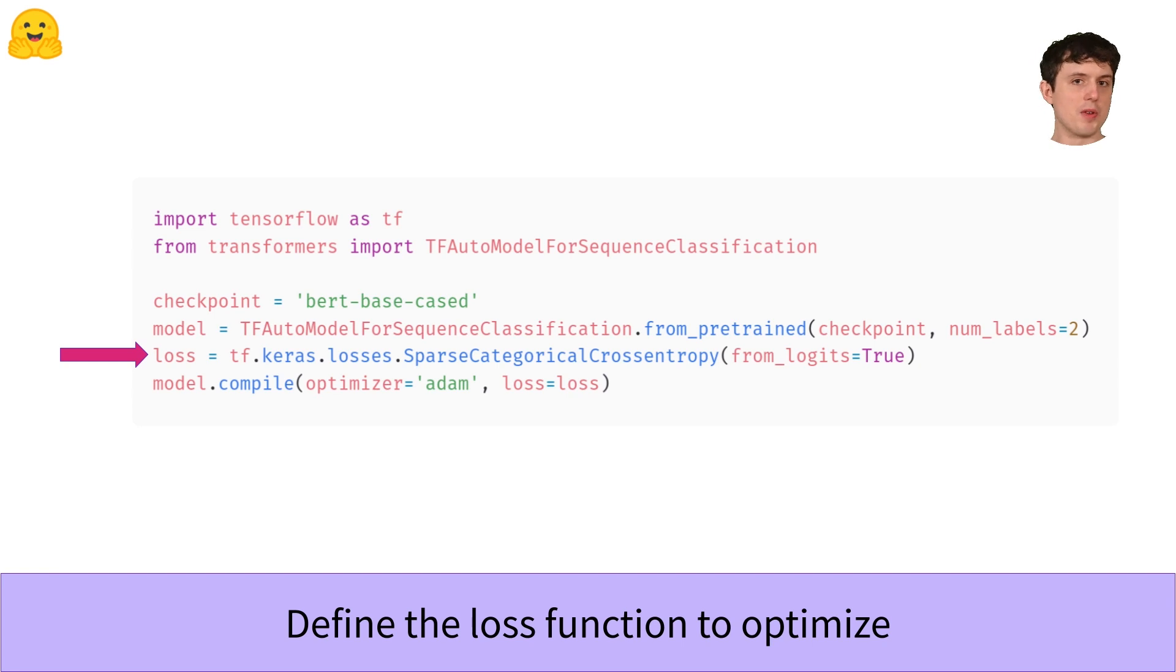So if you get this wrong, your model won't train and it'll be very annoying to figure out why. In future videos, we're going to see how to use the model's internal loss computations, so that you don't have to specify the loss yourself, and you don't have to worry about these details. But for now, remember to set from_logits to true.